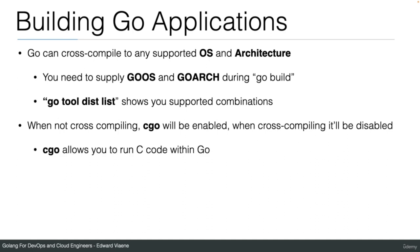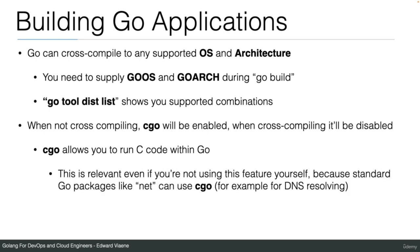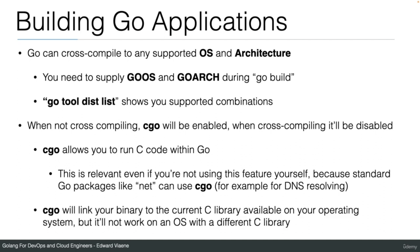When not cross-compiling, CGO will be enabled. When cross-compiling, it will be disabled. CGO allows you to run C code within Go. This is relevant even if you're not using this feature yourself, because standard Go packages like net can use CGO — for example, for DNS resolving. CGO will link your binary to the current C library available on your operating system, but it will not work on an OS with a different C library.